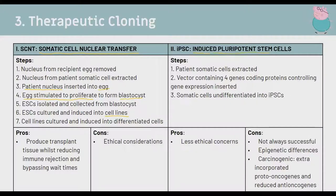The second type is induced pluripotent stem cells (iPSCs). You take somatic cells like epithelium, use a vector containing four gene-coding proteins to undifferentiate the cell back to a pluripotent state, then induce it to differentiate into a different cell type. There are fewer ethical concerns since no life is created, but it's not always successful and there's a significant carcinogenic risk associated with the mutations involved.